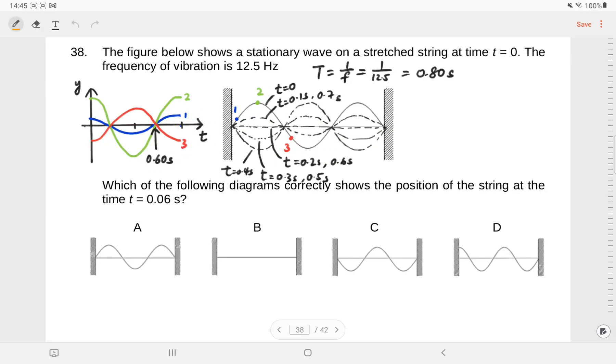In this question, we are shown a particular standing wave formed on a string at time equal to zero. So the original graph, the original wave profile corresponds to time equal to zero.